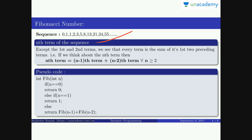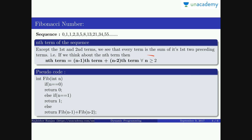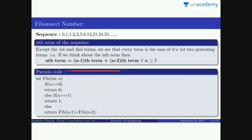Now if we see the nth term of the sequence, then except the 0th and first Fibonacci numbers, every term is the sum of its first two preceding terms. That means if we see the nth term, it would be equal to the (n-1)th term plus the (n-2)th term for all n greater than or equal to 2.